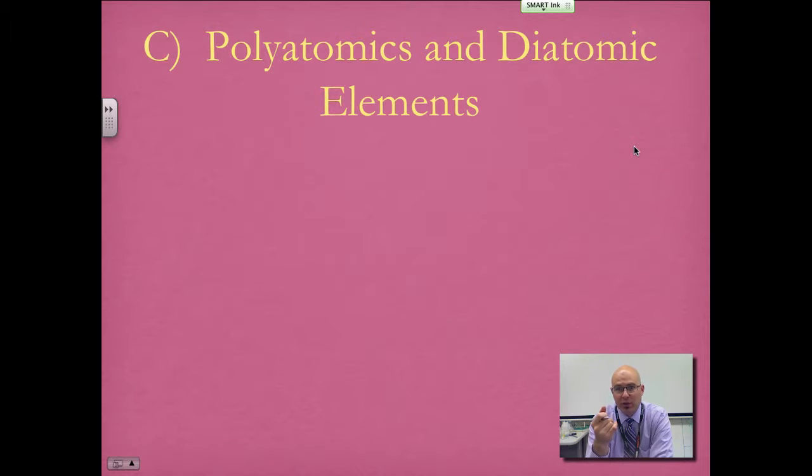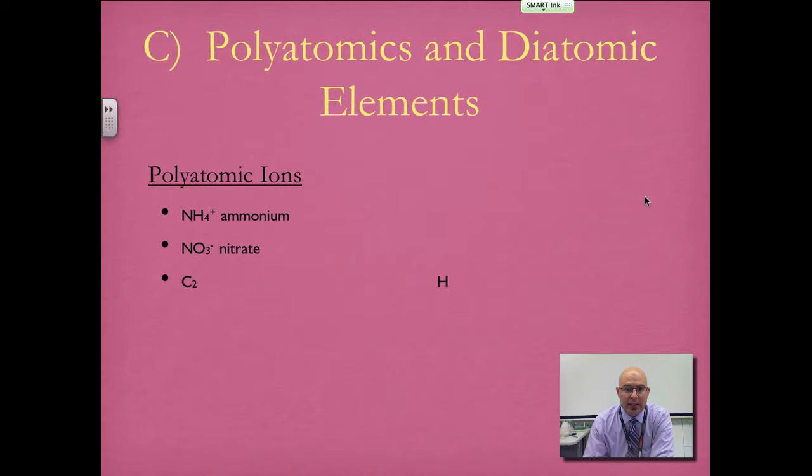The seven polyatomic ions I asked you to learn are ammonium, nitrate, acetate, hydroxide, sulfate, carbonate, and phosphate.